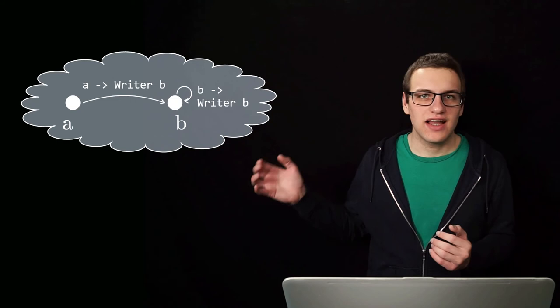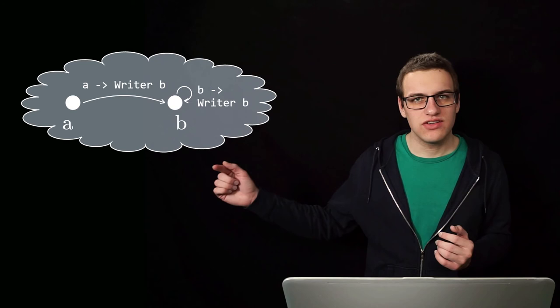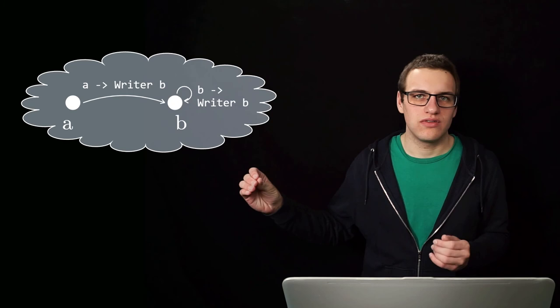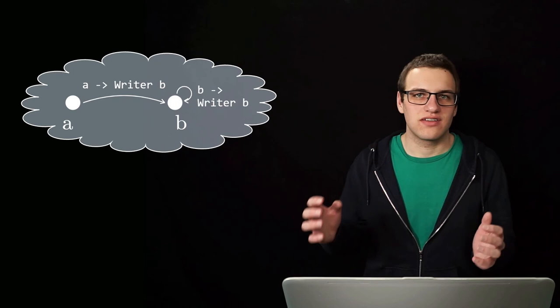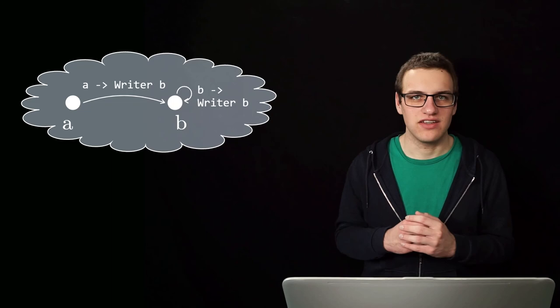This is called the Kleisli category. In the Kleisli category, if there are two objects A and B and there is a function between these two objects, then that function has a type of A to the Kleisli container of B. So in our case it is A to the writer of B. All functions inside this Kleisli category return something that is kind of wrapped inside this container with extra information — in our case that is the writer interface that also contains logging output.